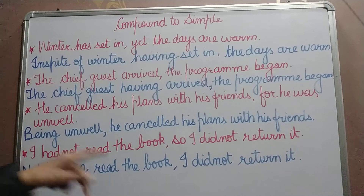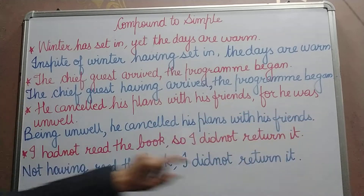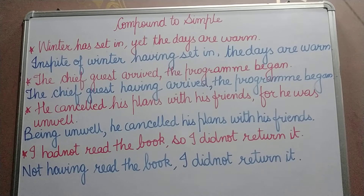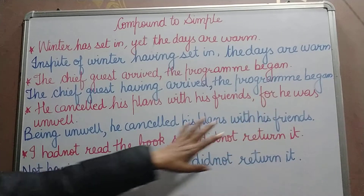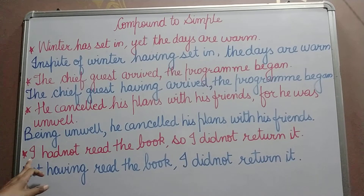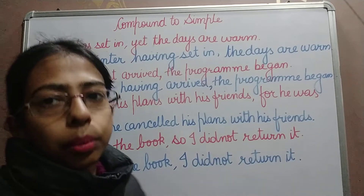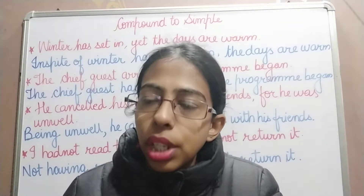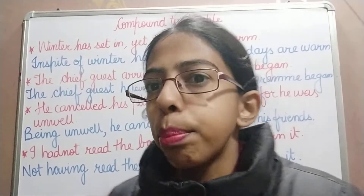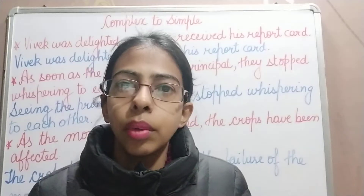Third example: 'He cancelled his plans with his friends, for he was unwell.' Eliminate 'for': 'Being unwell, he cancelled his plans with his friends.' Fourth example: 'I had not read the book, so I did not return it.' Converted: 'Not having read the book, I did not return it.' By eliminating the conjunction we can convert a compound sentence into a simple sentence.